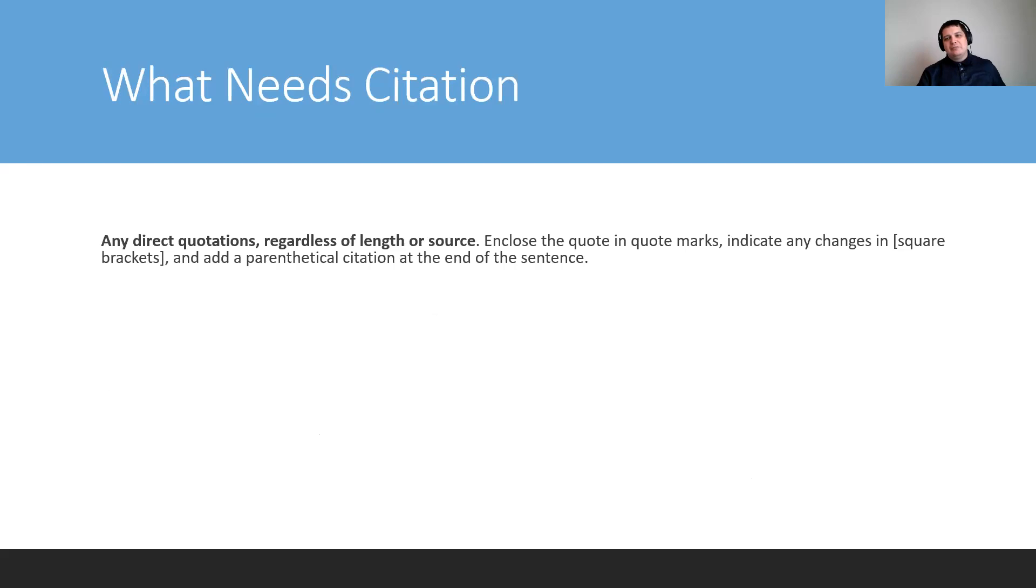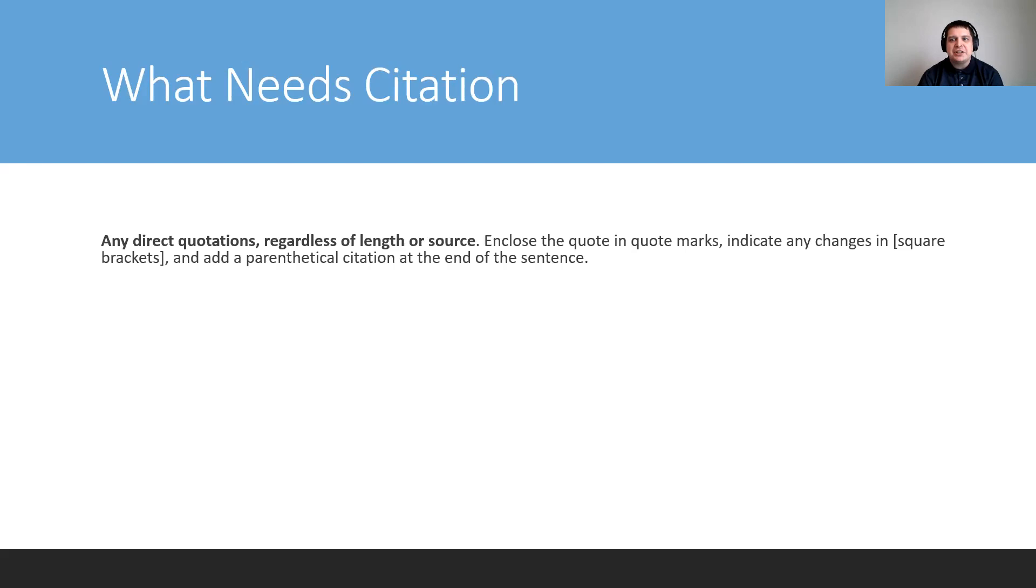So what do you need to cite? The short answer is everything. The long answer is just about everything. Obviously, if it is not your material. So any direct quotations, whether it comes from a dusty old book from the library that was written 150 years ago, or from a website that you saw today, whether it's one word or 100 words, you want to put the quote in quote marks. You want to indicate any changes you make in square brackets. And you want to put a parenthetical citation at the end of the sentence.